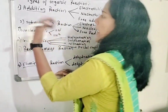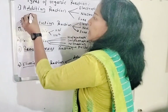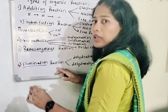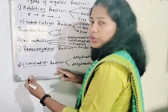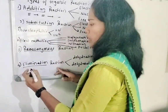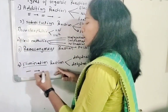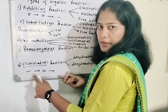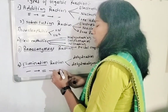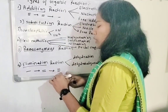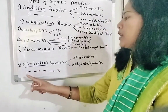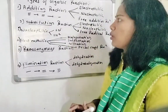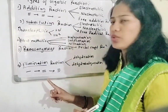So in Addition, we add spaces — triple bond gives double bond, double bond gives single bond. In Elimination, we eliminate — single bond makes double bond, double bond makes triple bond. These two reactions are the opposite of each other.